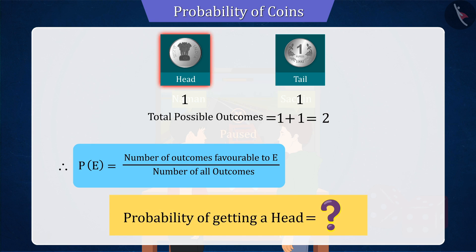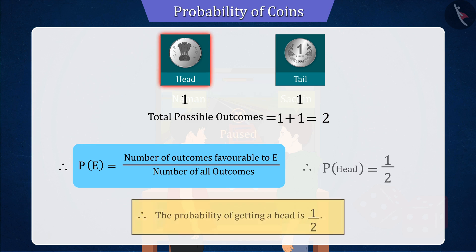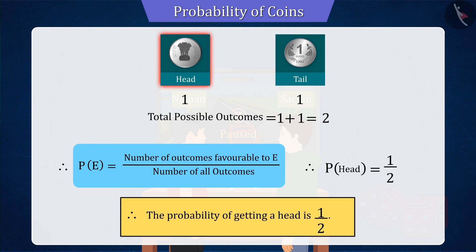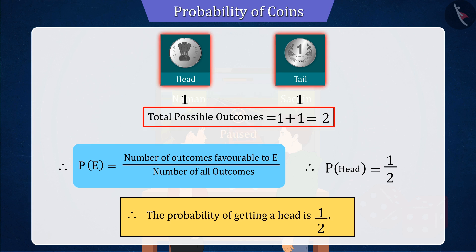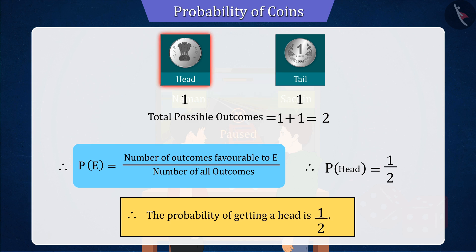So can you now find the probability of getting a head? Yes. According to the above statement, the probability of head will also be 1 by 2, since the total number of results is 2 and the possibility of head is only 1.